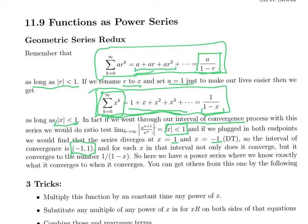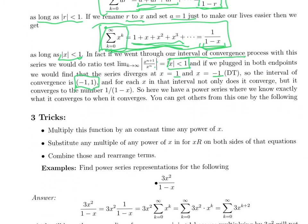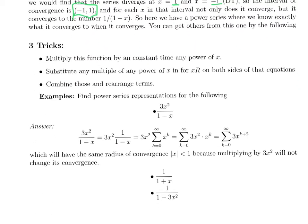Wherever the sum converges, it converges to that function. And outside, they've got nothing to do with each other. So this is one infinite series where we can write out what it converges to. We can find a lot more by playing with that one example. So here are three things we can do. We can multiply that function 1 over 1 minus x times any function in particular times any power of x. We can substitute anything in for x on both sides of the equation. And we can combine these and rearrange terms. So let me show you what I mean by that.